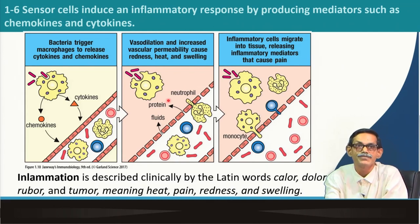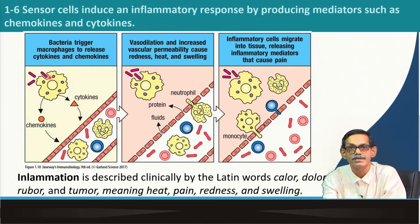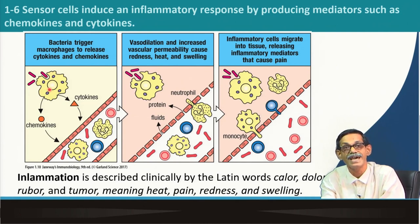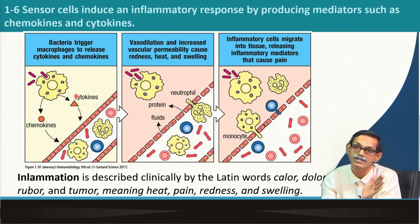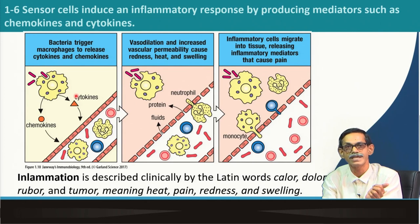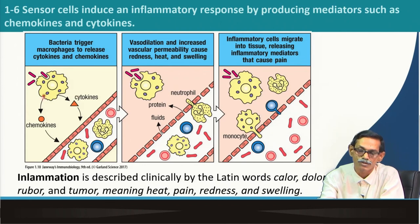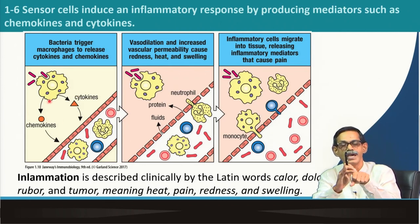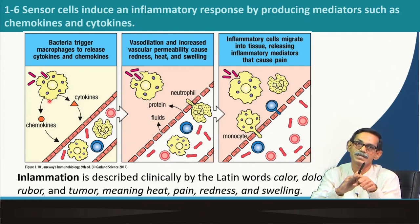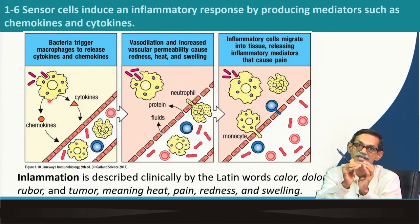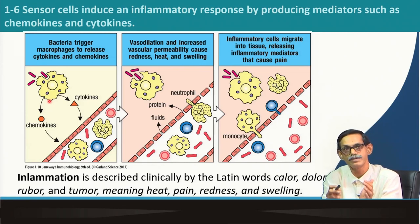The macrophage eats bacteria by recognizing them through cell receptors. As soon as they eat bacteria, they understand something new has entered and they become activated. Activated macrophages produce some molecules — cytokines and chemokines. Chemokines are chemicals with chemotactic activity, meaning they attract other cells to that particular site. Suppose this yellow part is the tissue — there is a bacterial infection, say a cut in the hand — there are macrophages and dendritic cells there. The macrophage will see the bacteria, recognize them, eat them, become activated, and produce cytokines and chemokines.